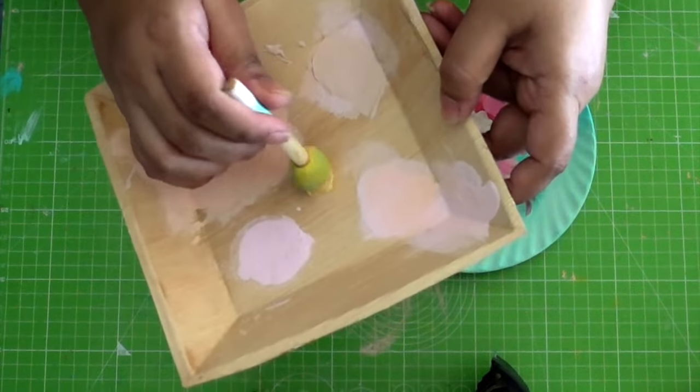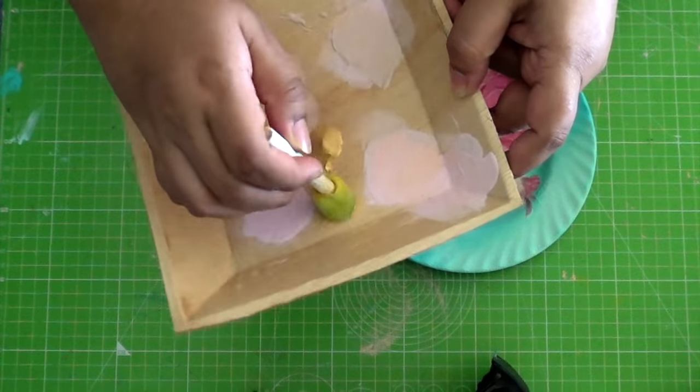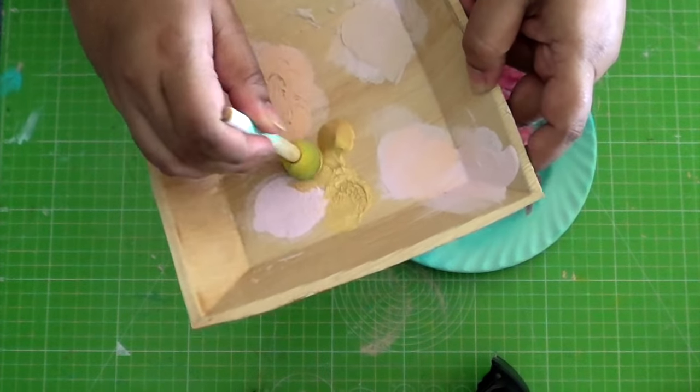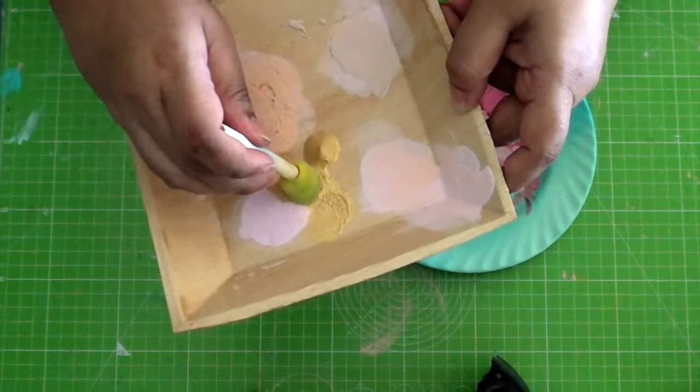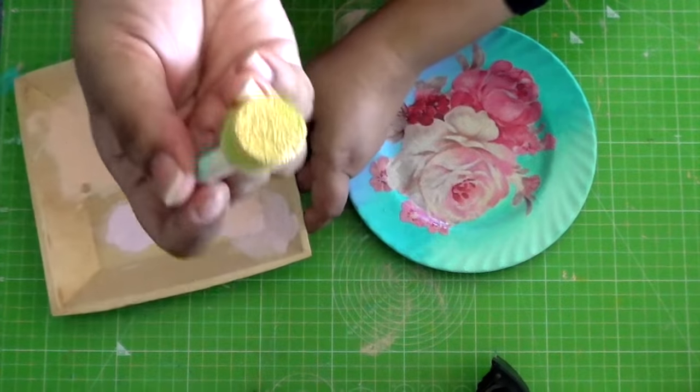Dip your sponge into the paint, dab it a few times to give it an even coverage. Make sure there's no excess paint on the sponge but it has the entire area covered with paint. This is how it should look.